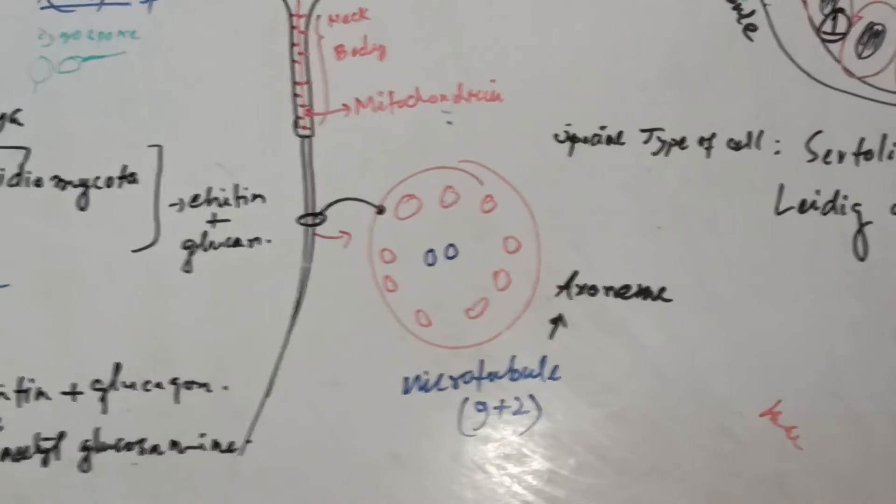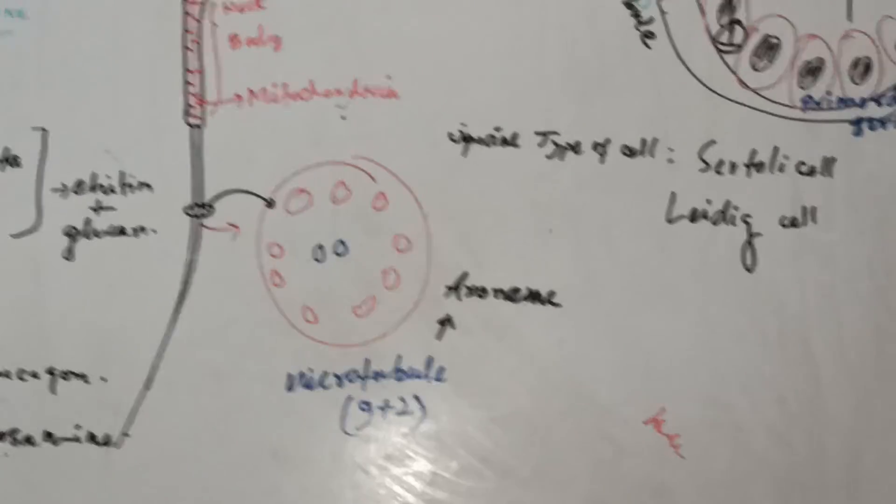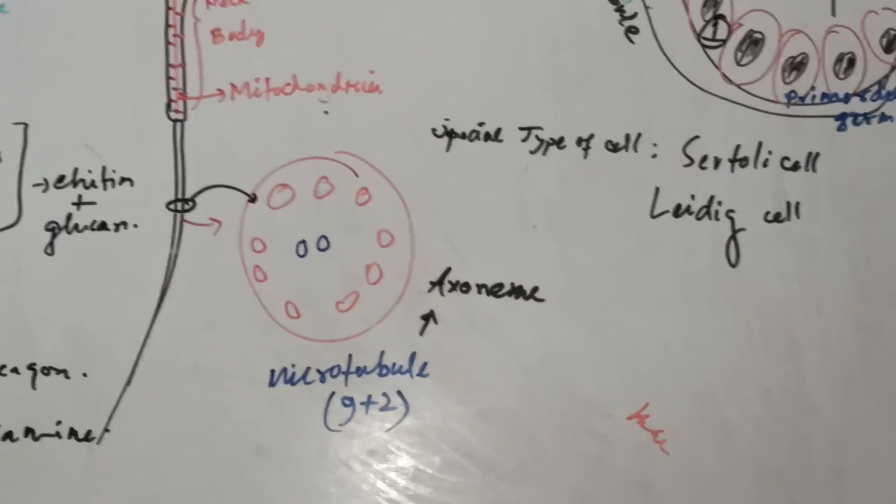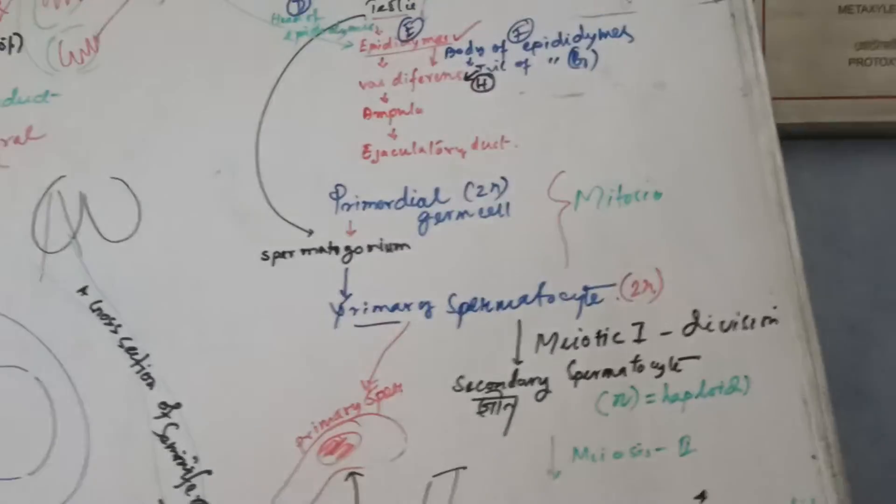The flagella is called an axoneme and has a 9+2 structure: nine microtubules in the peripheral circumference and two at the central core.